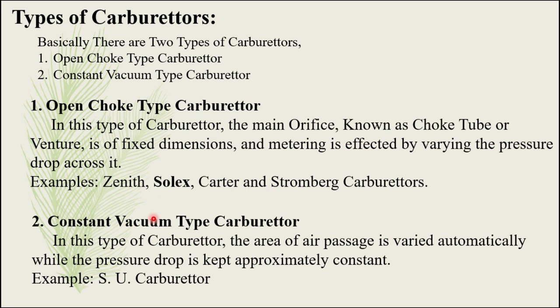The second category is the constant vacuum type carburetor. In this type, the area of the air passage is varied automatically while the pressure drop is kept approximately constant. An example of this category is the SU carburetor.